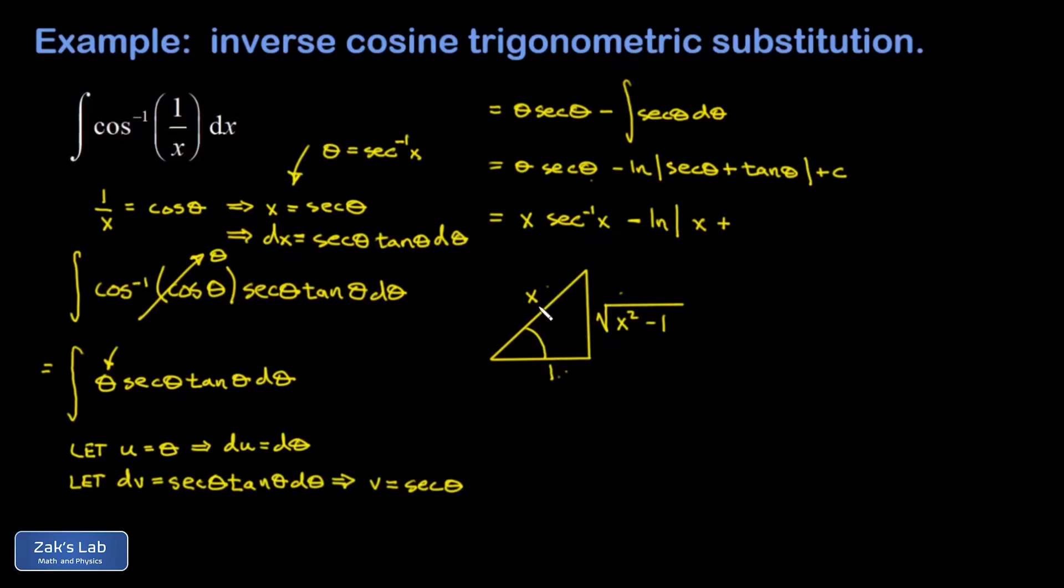Now I can see what the tangent of this angle theta is. That's the opposite over adjacent. So the tangent of theta is simply the square root of x squared minus 1. So back to our antiderivative, I have a tangent of theta in there. And that's just the square root of x squared minus 1. Don't forget your plus c. And that's one way to write the final answer.